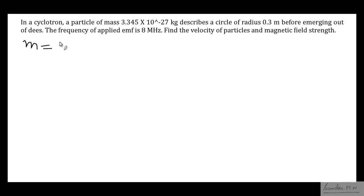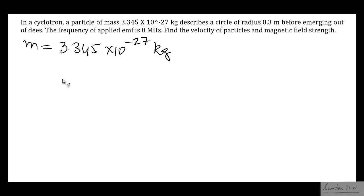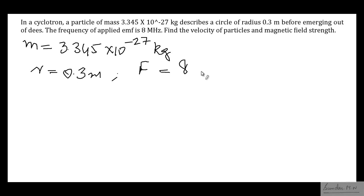Let us write down what is given. The mass of the particle is m = 3.345 × 10⁻²⁷ kg. The radius through which the particle is accelerated is r = 0.3 meters. The frequency of oscillation is f = 8 × 10⁶ Hz.